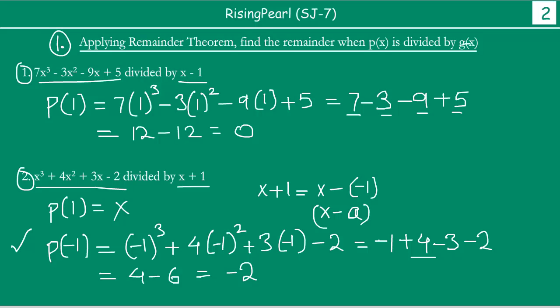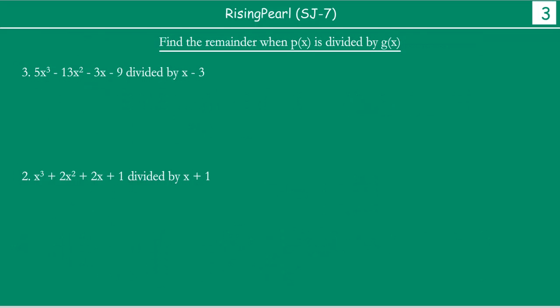Let us take a look at the second type of questions that you may be getting. This is our other type of question. The question can be given in the form: find the remainder when P(x) is divided by G(x). So this is a slight variation to the first type. You can directly be asked to find the remainder when P(x) is divided by G(x).